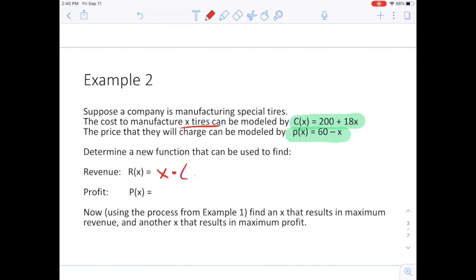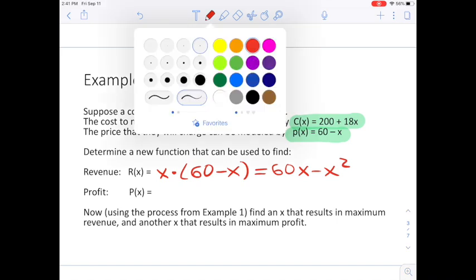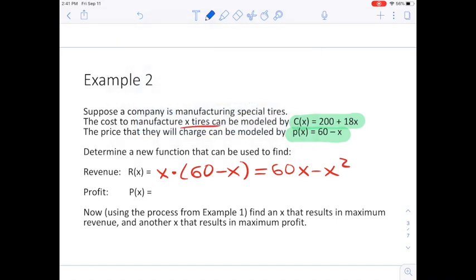If you want to, you can simplify that to 60x minus x squared by distributing. Now the profit is equal to the revenue minus the cost. Well, we just learned from the last part that the revenue is equal to 60x minus x squared, and the cost here will be 200 plus 18x. We could simplify that, but I'm just going to leave it in this unsimplified form which will work for our purposes.